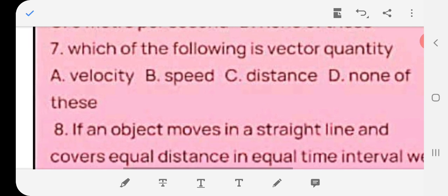Which of the following is the vector quantity? Vector quantity means with direction is also given. A velocity, B speed, C distance, D none of these. The correct answer is A velocity.